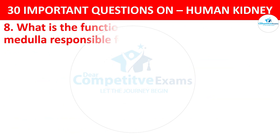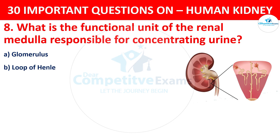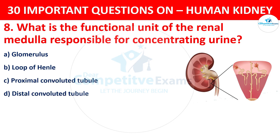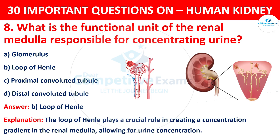Question 8. What is the functional unit of the renal medulla responsible for concentrating urine? Your options are: Glomerulus, Loop of Henle, Proximal Convoluted Tubule, or Distal Convoluted Tubule. The correct answer is B, i.e. Loop of Henle. The loop of Henle plays a crucial role in creating a concentration gradient in the renal medulla, allowing for urine concentration.